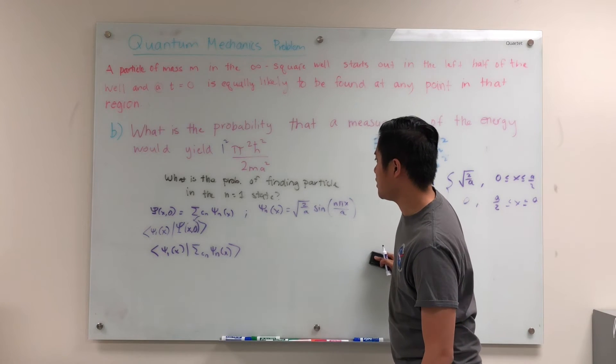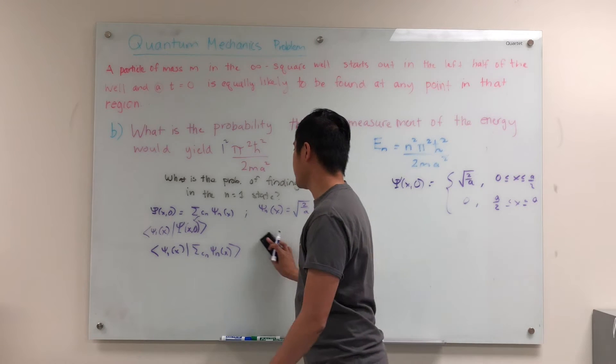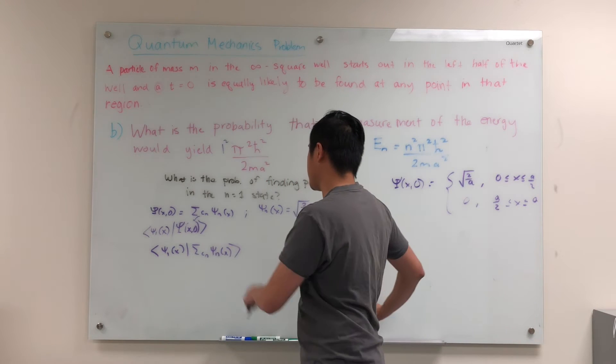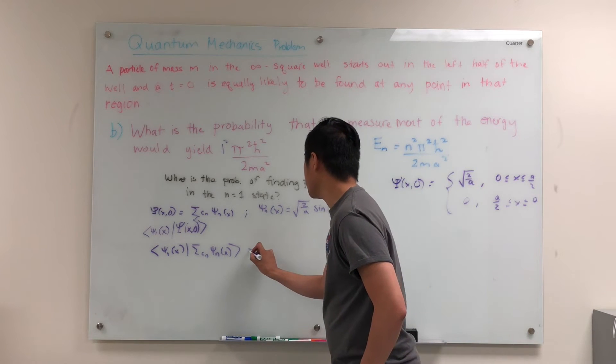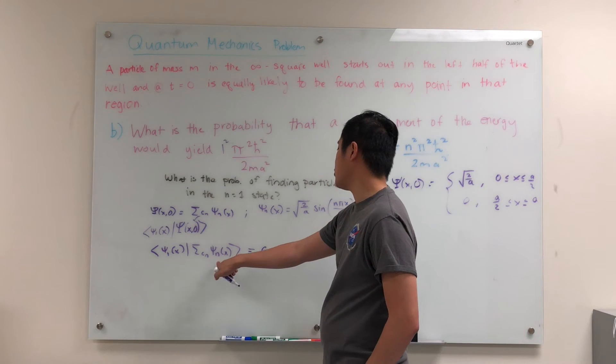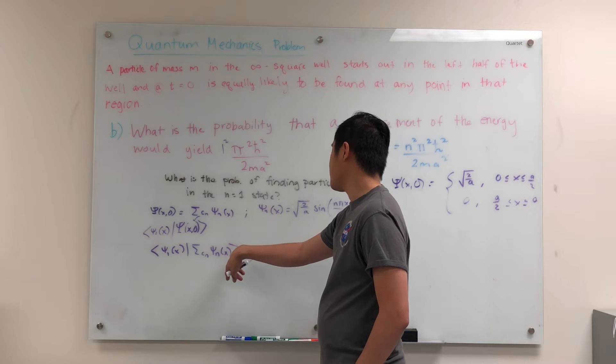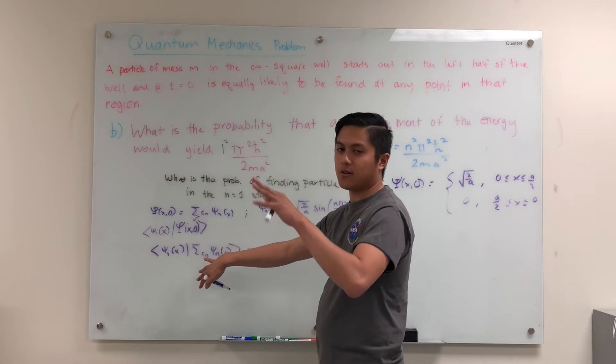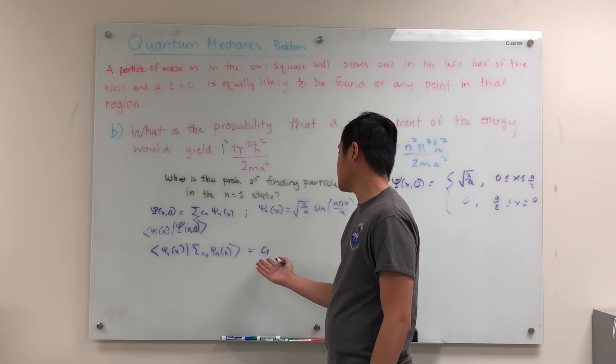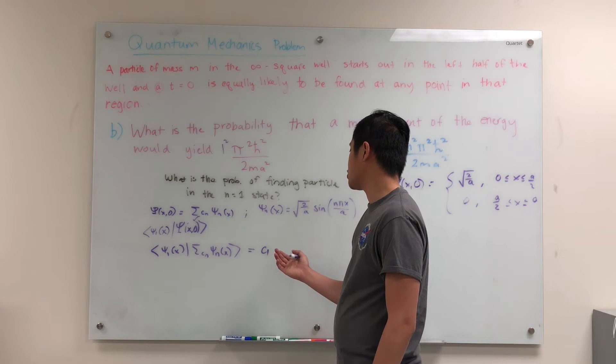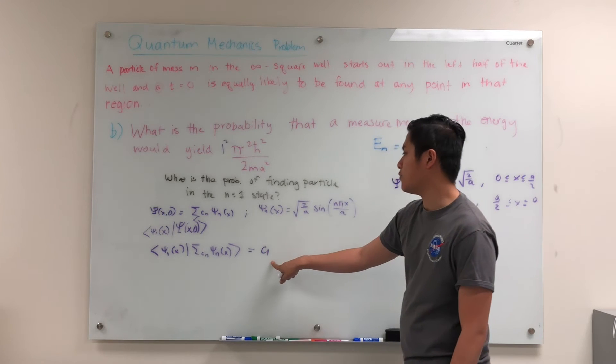And so essentially what we're going to do here is that when we operate on this, what comes out is this going to be C1, because every other state that's not n equals 1 is just going to give us a 0. So we'll be able to extract the C1 coefficient.